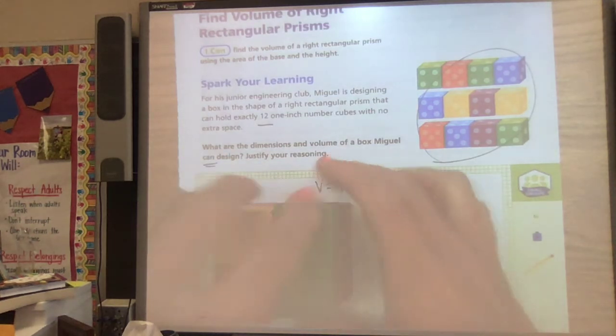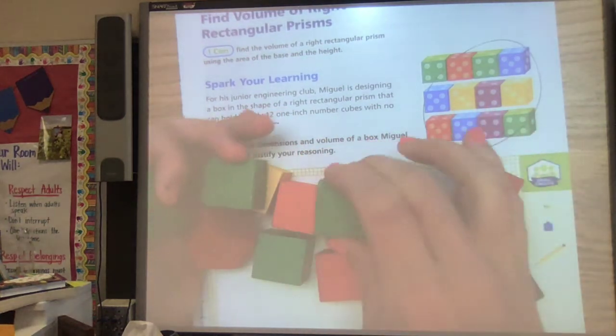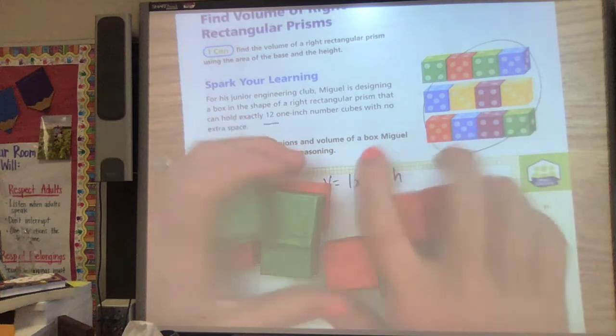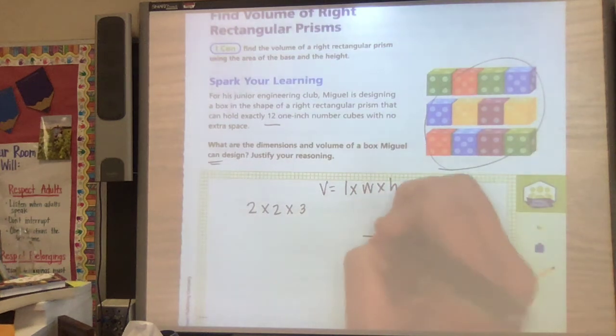So it's hard to see it, but it could also be very many ways. Think of an example that you could do. What times what times what will give you 12?